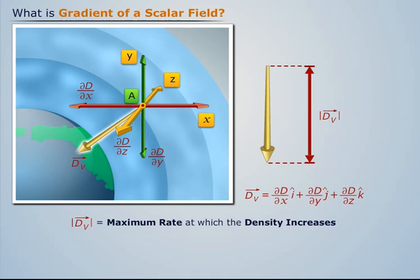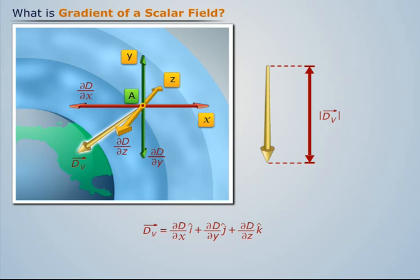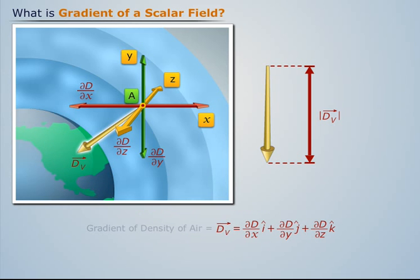Such a vector quantity is known as the gradient of density of air.